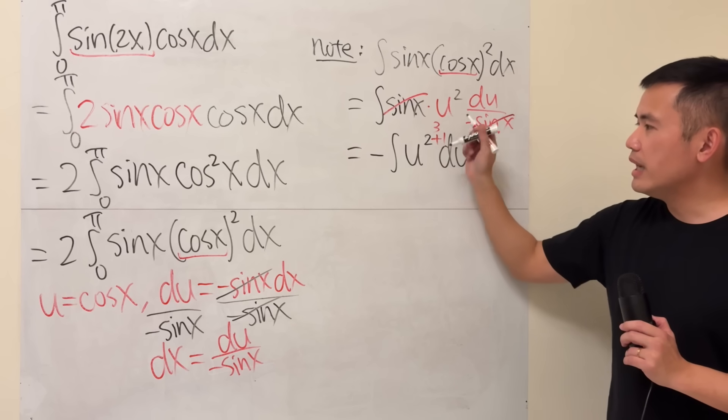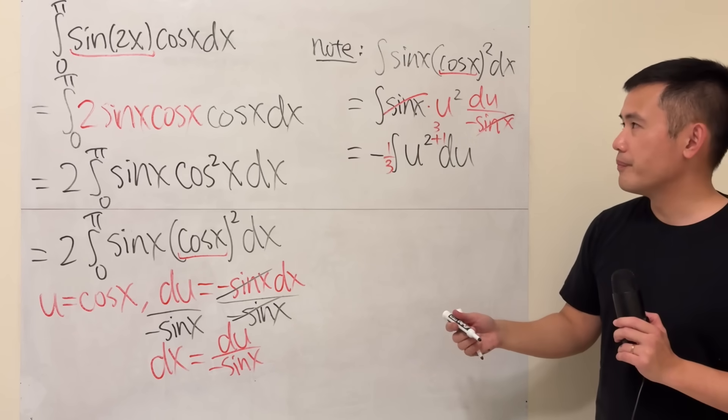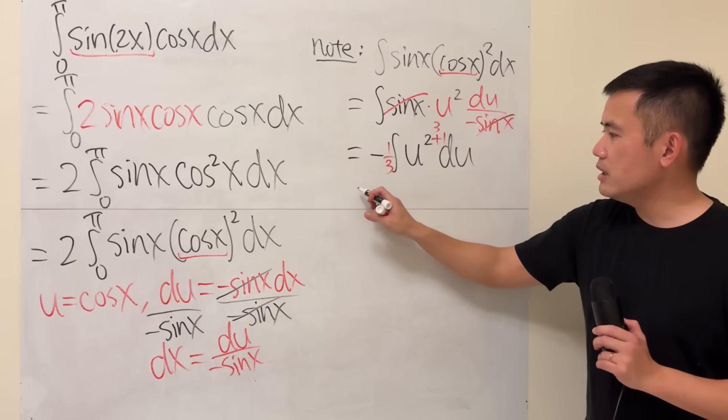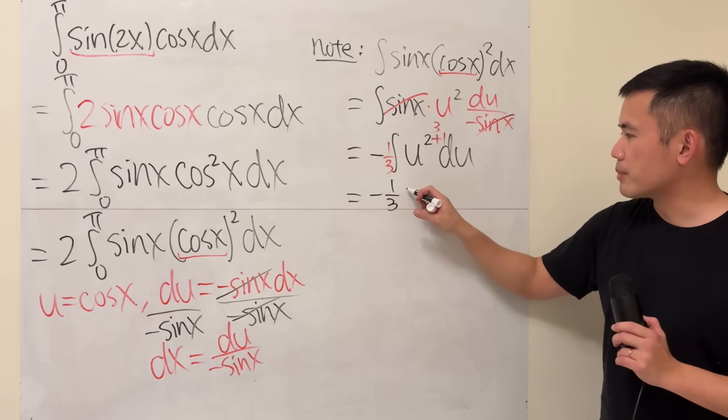The new power is 3, and then we are going to divide it by the new power. So I just put a 3, well, 1 third in the front. So this integral here is equal to negative 1 third, and then u to the third power.